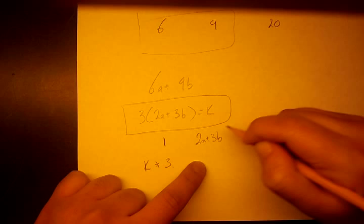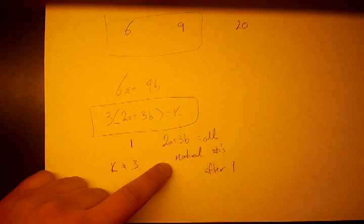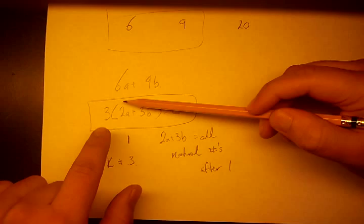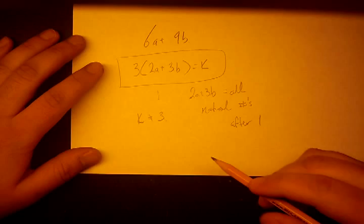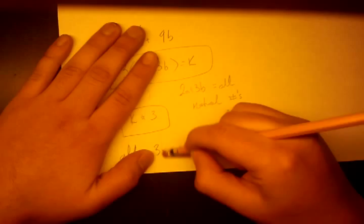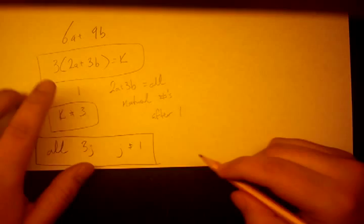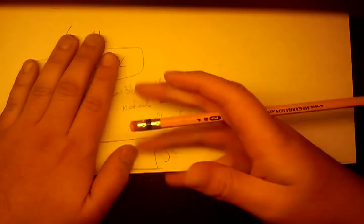Since two·a + three·b can equal every natural number after one — that is, two, three, four, five, six, and so on — three times that expression covers every multiple of three except three itself. So we can form all values 3j where j does not equal one and j is greater than or equal to zero.